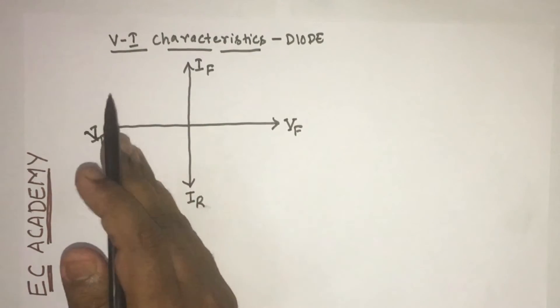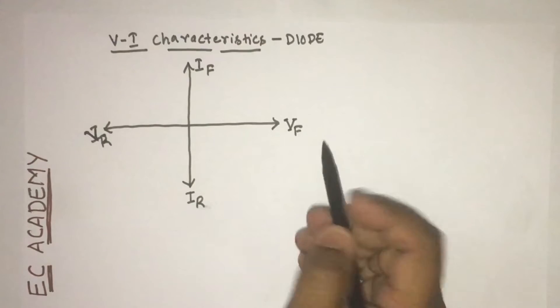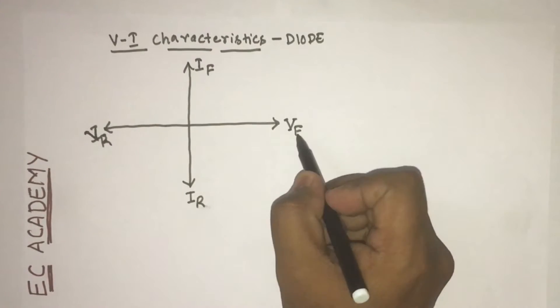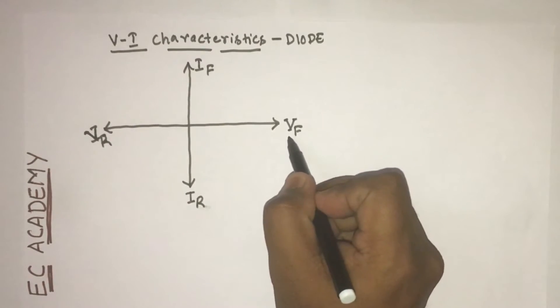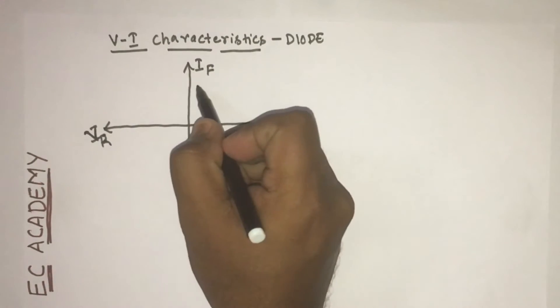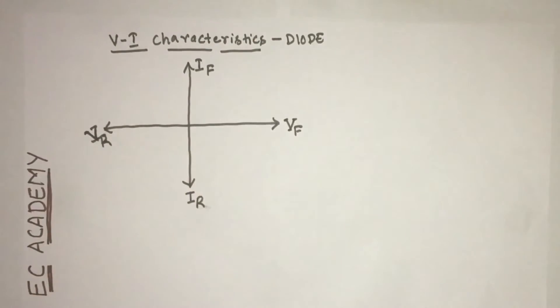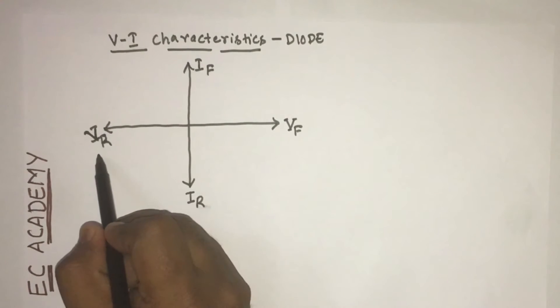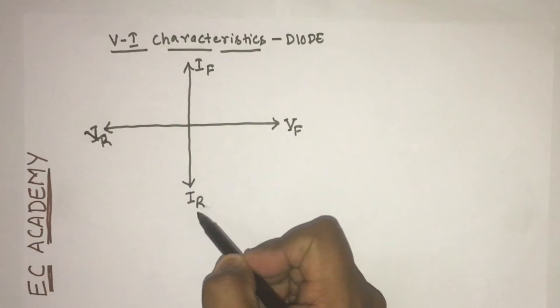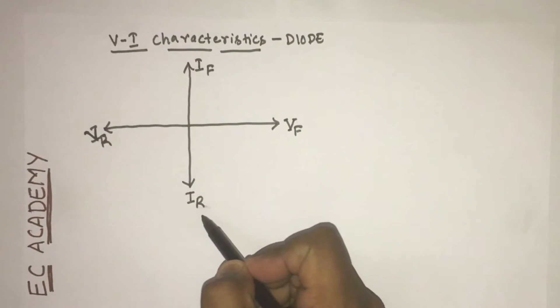Towards the right hand side of the graph, we have written this as Vf and If, and towards the left hand side of the graph, we have written it as Vr and Ir.